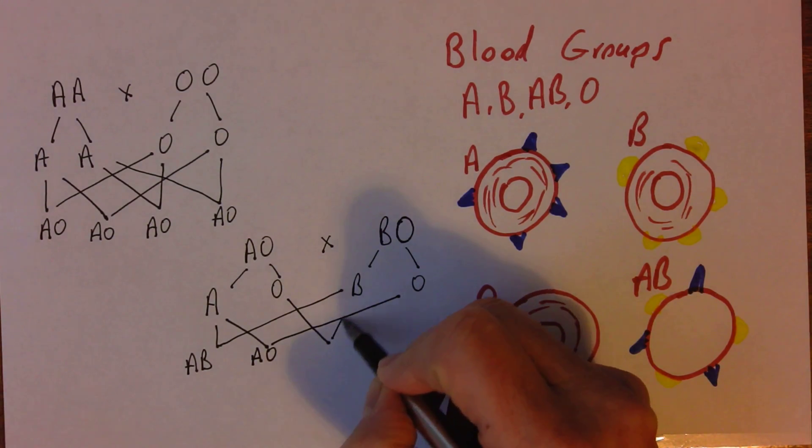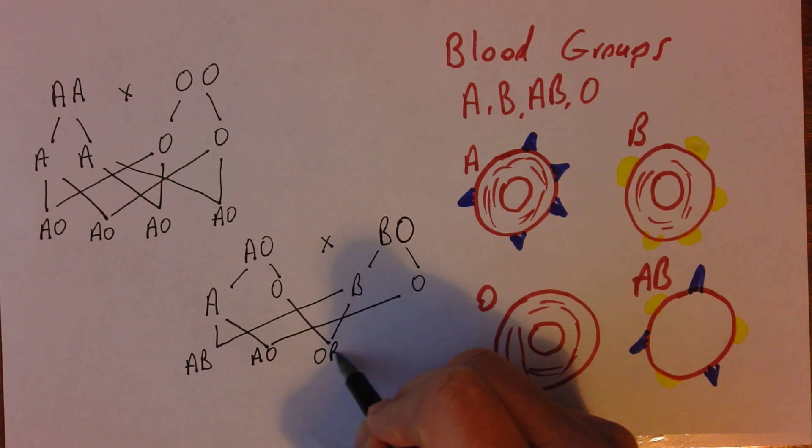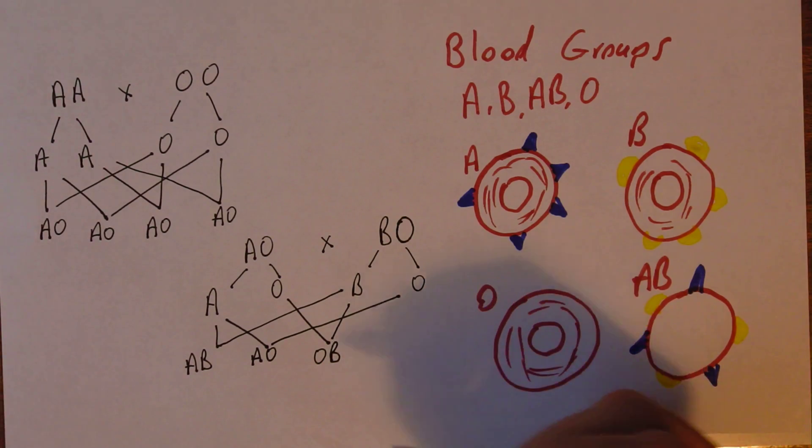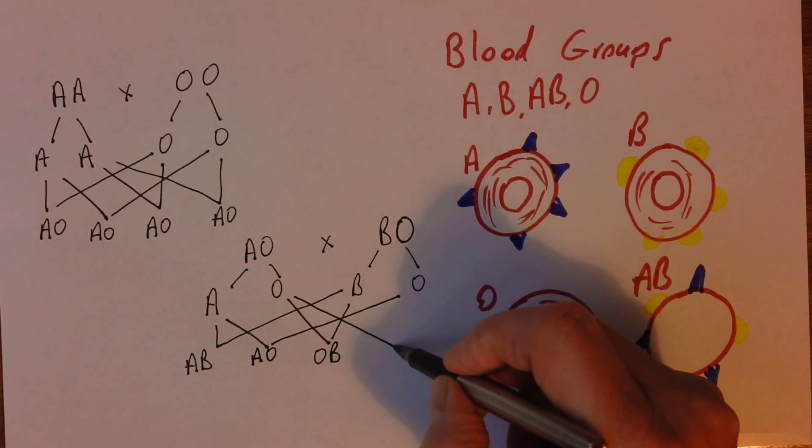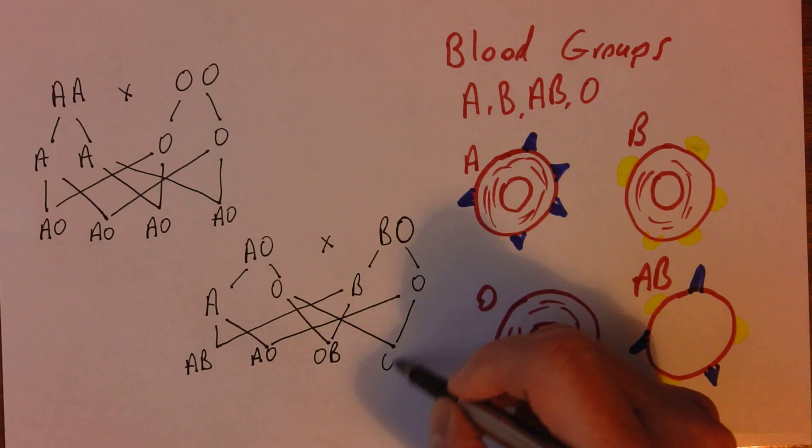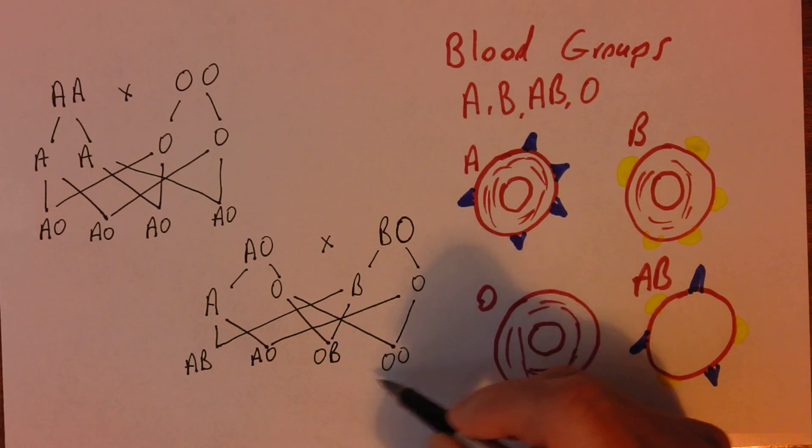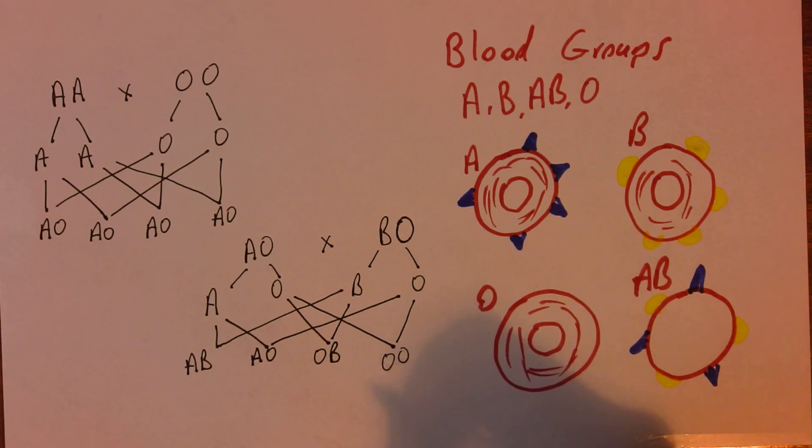O could combine with B giving us OB. And again because the B is dominant over the O, that person will have blood group B phenotypically. Those two could also come together, giving us OO. And because there is no dominant gene present, the blood group O, the recessive gene will be expressed in the phenotype, and that person will be blood group O.